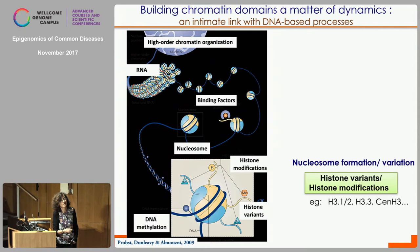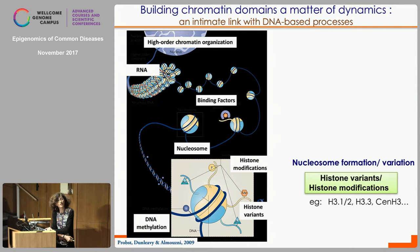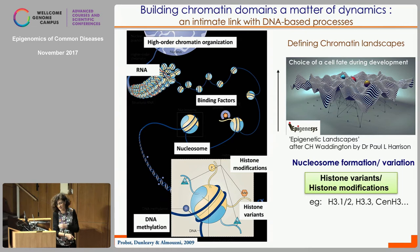Then the way nucleosomes are organized in arrays, with binding factors and transcription factors that contribute to punctuate the organization, RNA as part of this, and finally the geography in the nucleus where the different regions are located. We can translate this by revisiting cell fate during development, thinking about how you define a landscape at the level of chromatin using these different elements.